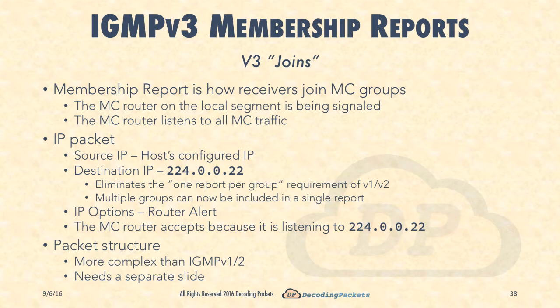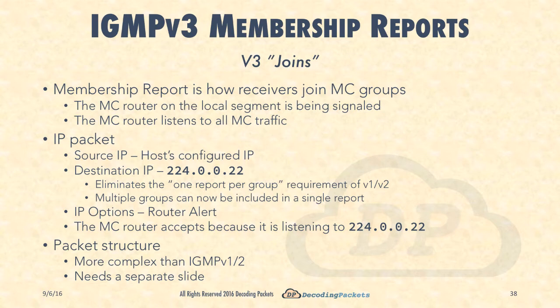The membership report represents version 3 joins - essentially how receivers signal their interest in a group and join the multicast group to start receiving traffic. The last hop router on the local segment is being signaled to start sending packets for this group down to the actual receivers. In this particular case the router is specifically tuned to 224.0.0.22. Looking at the IP packet: the source IP is the host's configured IP, but the destination is now 224.0.0.22.